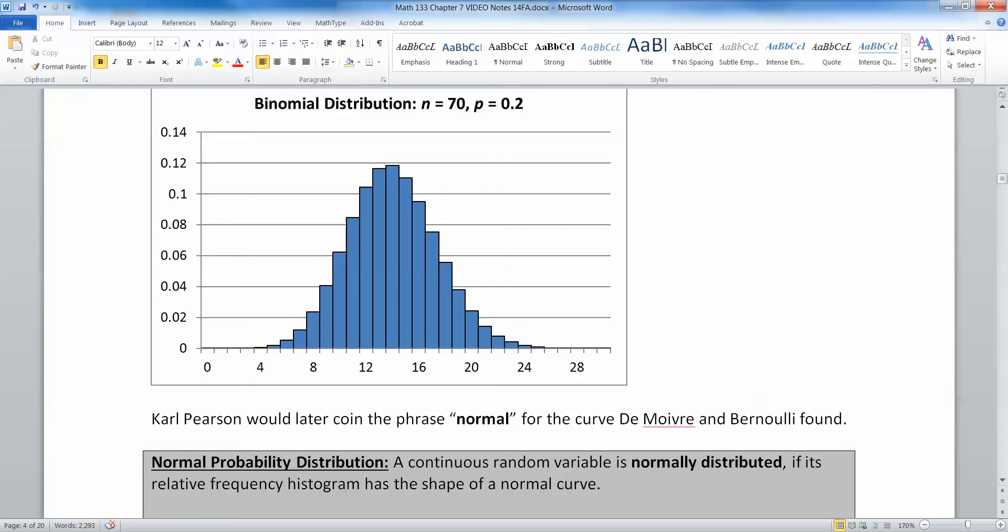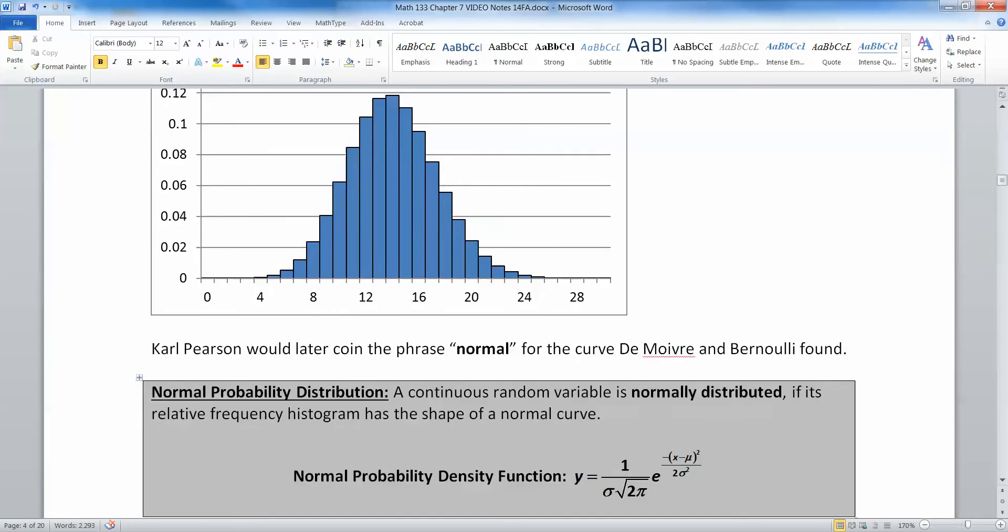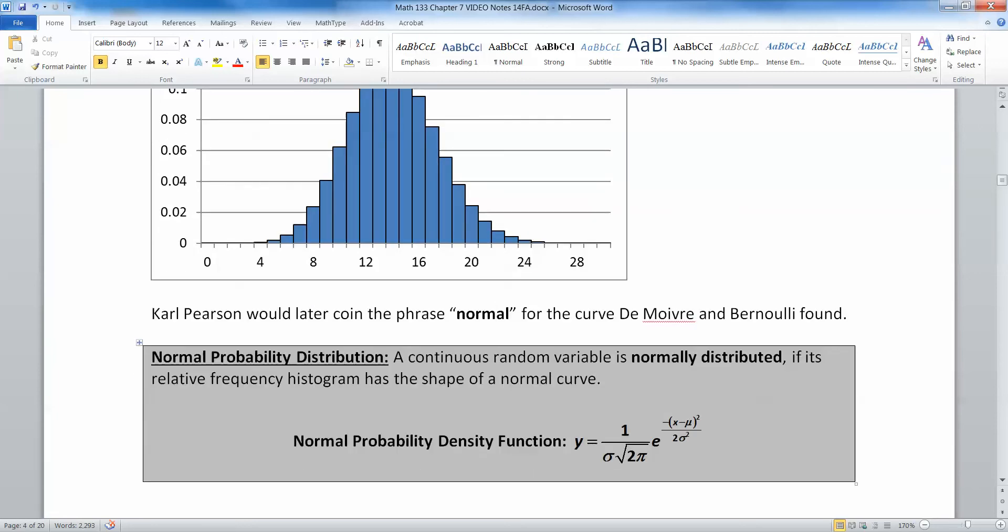And it is an extremely important curve to us. We are going to be using it a lot from this point on to the rest of the end of the course. Very, very important. All right, so what is the normal probability distribution? Its continuous random variable is normally distributed if its relative frequency histogram has the shape of a normal curve.